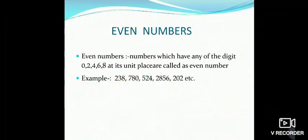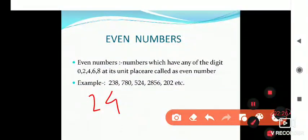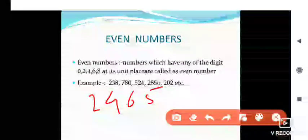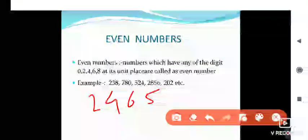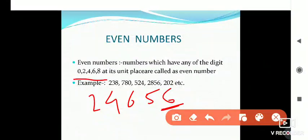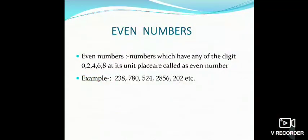One more example: take 2465. Any number, no matter how many digits it has, you just check the last digit. If it is 0, 2, 4, 6, or 8, it is an even number. Here 6 is at the unit place, that is why this number is an even number.